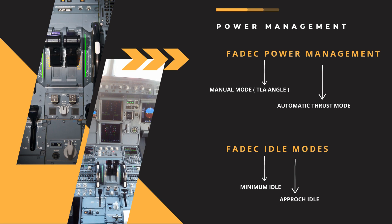The idle can also be modulated up to approach idle depending on air conditioning demand, wing anti-ice demand, engine anti-ice demand, and oil temperature. The EEC needs to receive the EPGS load from the GCU for engine performance optimization, and the EEC provides speed information to the generator control unit for under-speed set point, control, and protection.